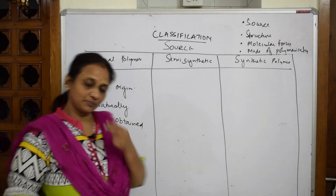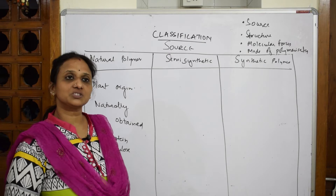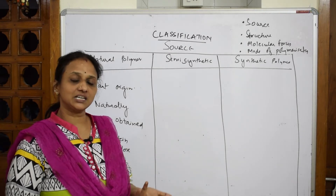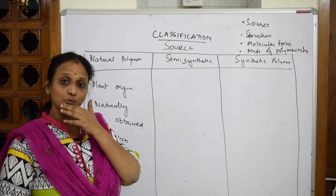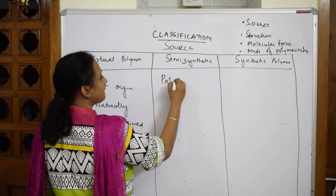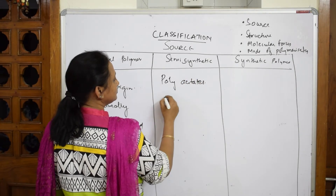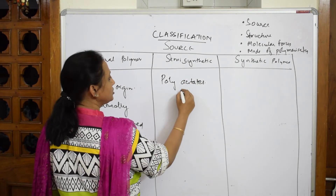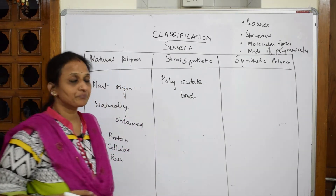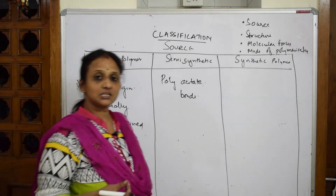Semi-synthetic polymers are those which have poly acetate bonds in them. They are basically called polymers with poly acetate bonds.